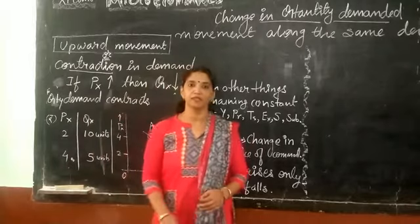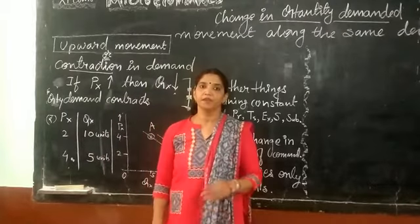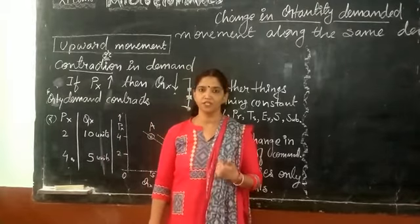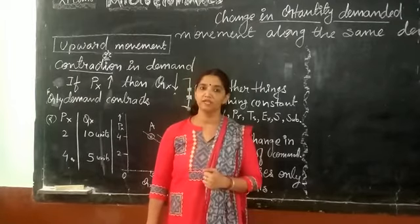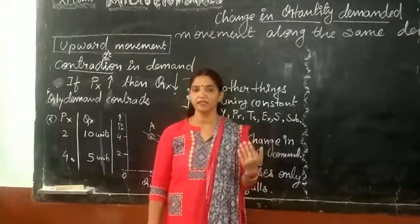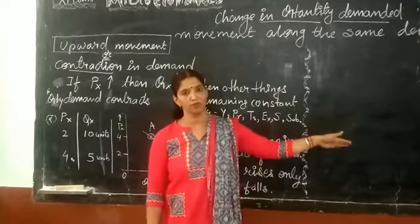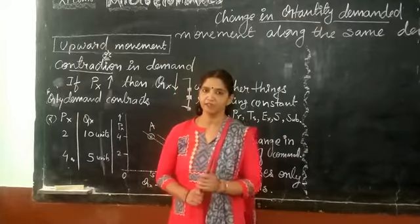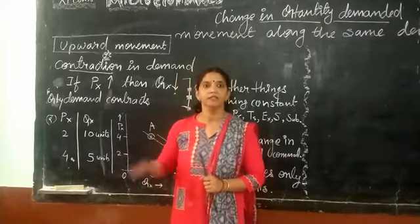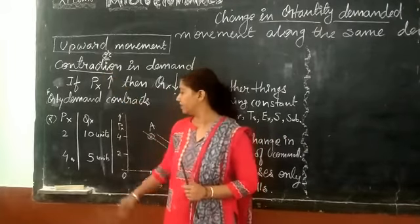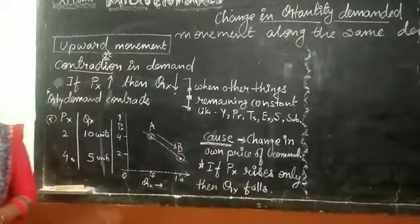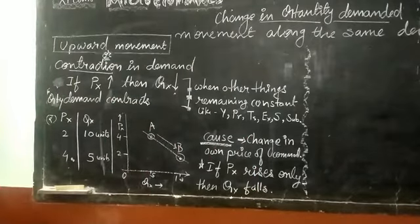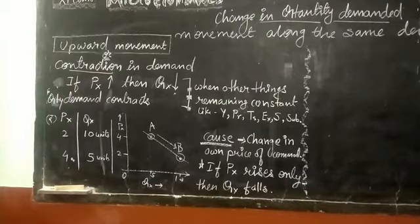Movement along the same demand curve is of two types. First is upward movement along the same demand curve, and second is downward movement along the same demand curve. First we will discuss the upward movement along the same demand curve. If there is upward movement along the same demand curve, then we can say that there is contraction.